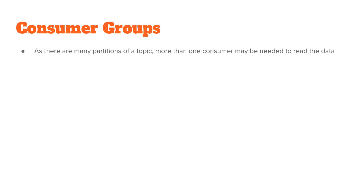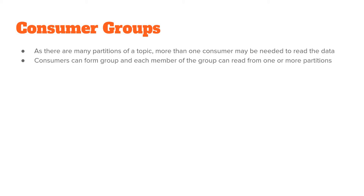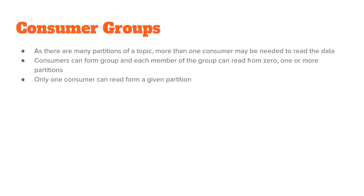A Kafka topic is split into many partitions, so for scalability we may need more than one consumer to read data from a topic. Consumers can form groups to read simultaneously from a Kafka topic, and each member can read from 0, 1, or more partitions. Importantly, only one consumer can read from a given partition. If a topic has N partitions and there are more than N consumers in a consumer group, some consumers will sit idle.